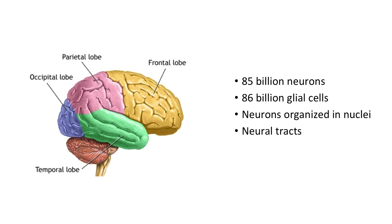Neurons in our cortex — the outer layer of our brain — are organized in little clusters, and we call these clusters nuclei. So you have one nucleus and if it's plural it's nuclei. Whenever neurons have similar functions or if they look alike, they are all clustered together in a nuclei. Cells that are close together make the most of their connections with one another, and they also make long distance or long range connections. These long distance connections form neural tracts.